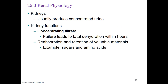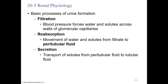The kidneys produce concentrated urine; their overall function is to concentrate the filtrate. Failure to do so can lead to fatal dehydration within hours. Reabsorption and retention of valuable materials — like sugar and amino acids — is critical. The three basic processes of urine formation are: filtration (blood pressure forces water and solutes across the walls of glomerular capillaries into the renal corpuscle), reabsorption (movement of water and solutes from the filtrate to the peritubular fluid or body), and secretion (transport of solutes from peritubular fluid into the tubular fluid or nephron).